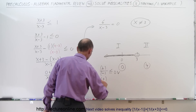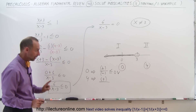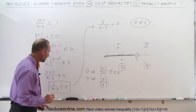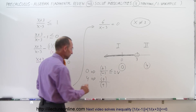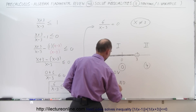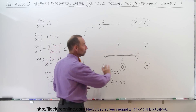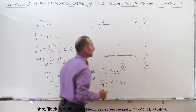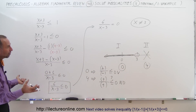Now let's try x equals 4, a test point in Region 2. The numerator is always positive 6, and 4 minus 3 equals 1, also positive. A positive divided by a positive is positive, and a positive number cannot be less than or equal to 0. So anything to the right of 3 does not satisfy the inequality.